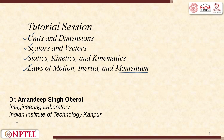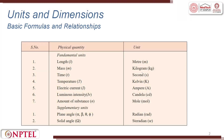Let us have a quick look at the units and dimensions basic formulas and relationships discussed in the first week. There are 7 fundamental units: length, mass, time, temperature, electric current, luminous intensity and amount of substance — with their respective SI units, for example length in meters or mass in kilograms, time in seconds.